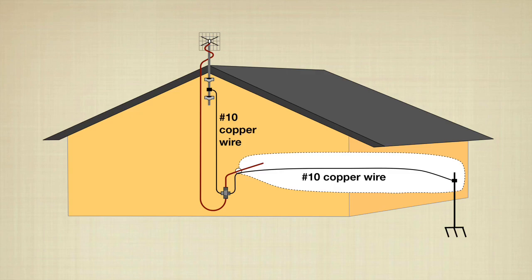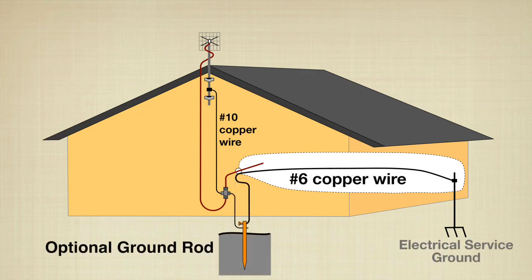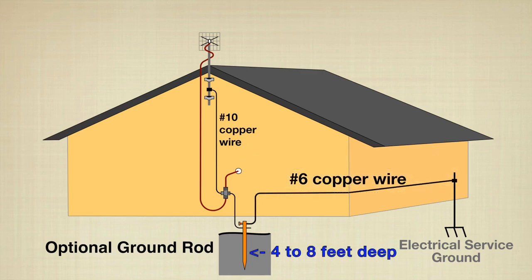Sometimes when the coax ground block is a long distance from the electrical service ground, an optional ground rod can be installed near the ground block. In this case, number six copper wire should be used between the ground rod and service ground. Some codes require the ground rod be at least eight feet deep. Others require four feet.